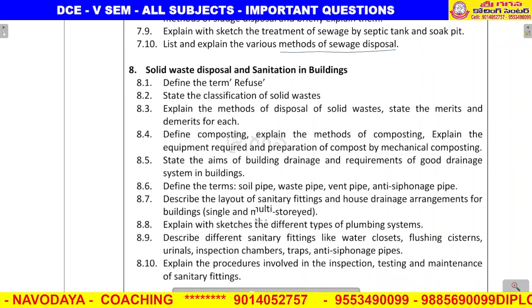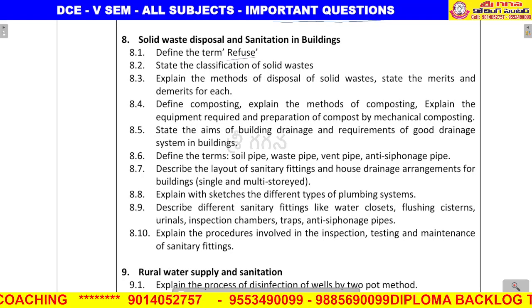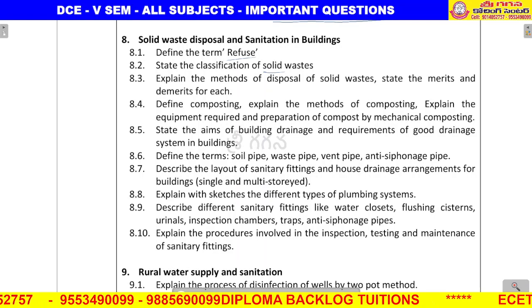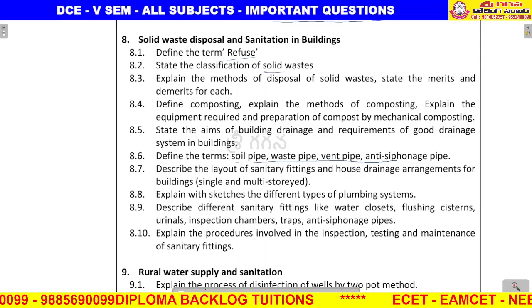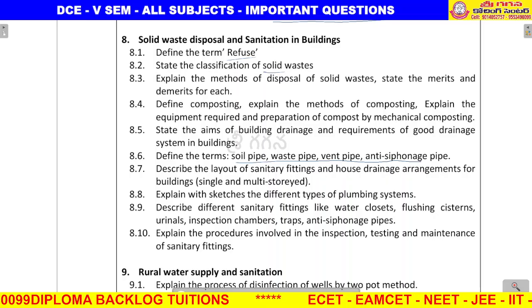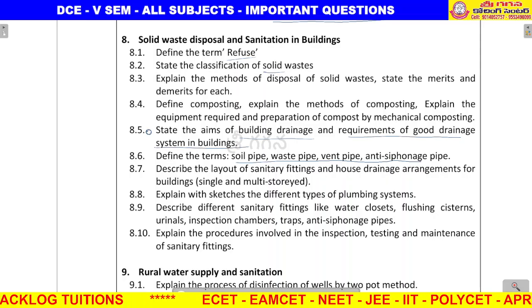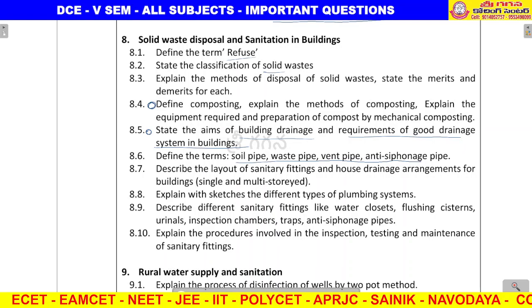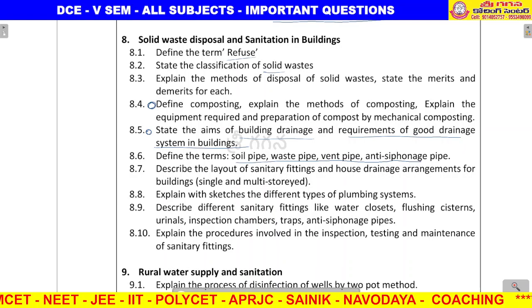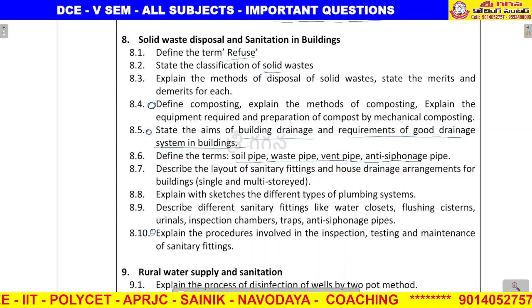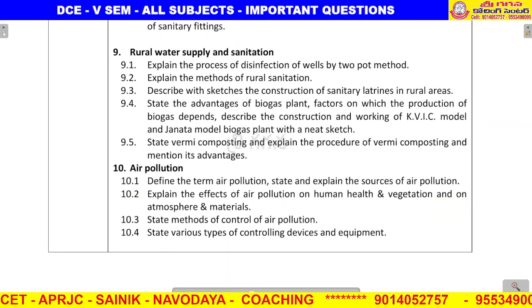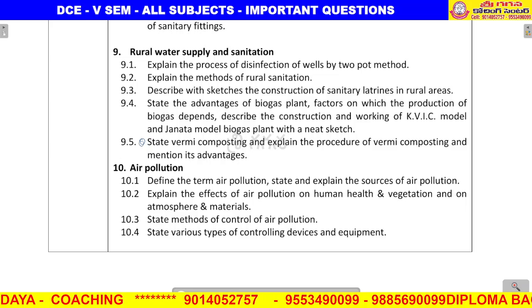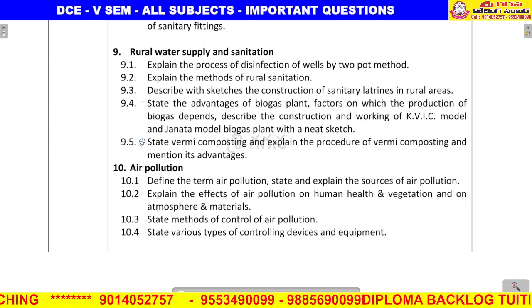Eighth unit: solid waste disposal and sanitation in buildings. Definitions of soil pipe, waste pipe, vent pipe — three marks. State the aims of building drainage and requirements of a good drainage system in buildings — important question. Define composting and what are the different methods of composting — important. Explain the procedure for inspection, testing and maintenance of sanitary fittings. Rural water supply and sanitation: what is vermicomposting, its procedure and advantages — important. Biogas plant — also important.